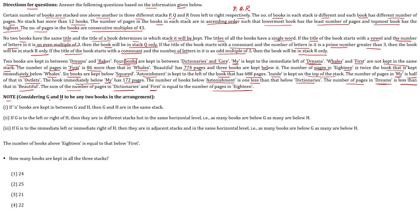Note that considering G and H to be any two books in the arrangement: if N books are kept between G and H, then G and H are in the same stack. For example, if four books are between Dictionary and Care, they must be in the same stack. If G is to the left or right of H, then they are in different stacks but in the same horizontal level, meaning as many books are below G as below H. So Astonishment to the left of the book with 688 pages means 688 is to the right of Astonishment in the same horizontal line.